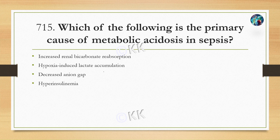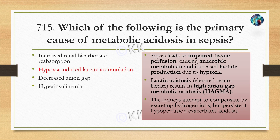Next question — which we have partly discussed: what is the primary cause of metabolic acidosis in sepsis? Option A: increased renal bicarbonate reabsorption. Option B: hypoxia-induced lactate accumulation. Option C: decreased anion gap. Option D: hyperinsulinemia. The correct answer is Option B: hypoxia-induced lactate accumulation.